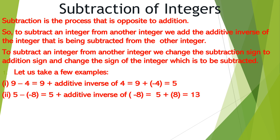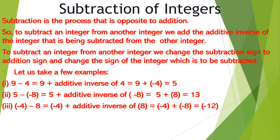Now 5 minus minus 8 is equal to 5 plus the additive inverse of minus 8, which equals 5 plus 8, that is 13. Now minus 4 minus 8 is equal to minus 4 plus the additive inverse of 8. So minus 4 plus negative 8 equals negative 12.